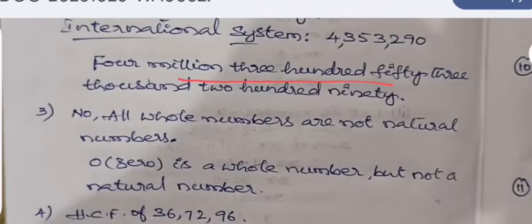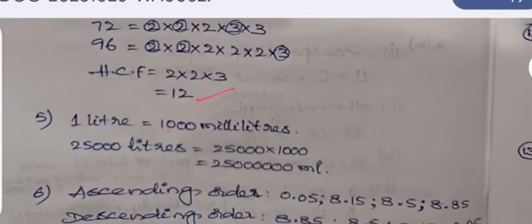Third one: No, all whole numbers are not natural numbers because zero is a whole number but it is not a natural number. HCF of 36, 72, 96 is calculated by factorization method. The common factors of all are taken and multiplied, so the answer is 12. One liter is equal to 1000 milliliters, so 25,000 liters is equal to 25 into 1000, so this is the number which is in milliliters.